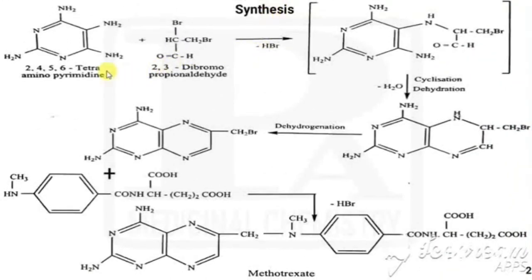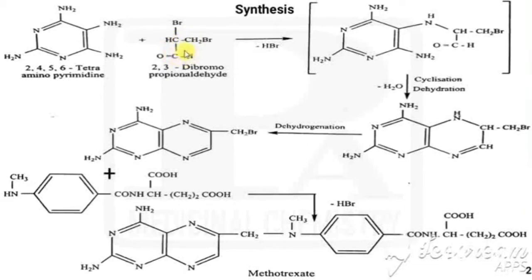Now we will see the synthesis of methotrexate. The starting material contains a pyrimidine ring with amino groups at positions 2, 4, 5, and 6 — that is why it is called 2,4,5,6-tetraaminopyrimidine. To this we add a three-carbon aldehyde compound; with three carbons it is propane and having an aldehyde it is propanaldehyde. The second and third carbons have bromo groups, making it 2,3-dibromopropanaldehyde.